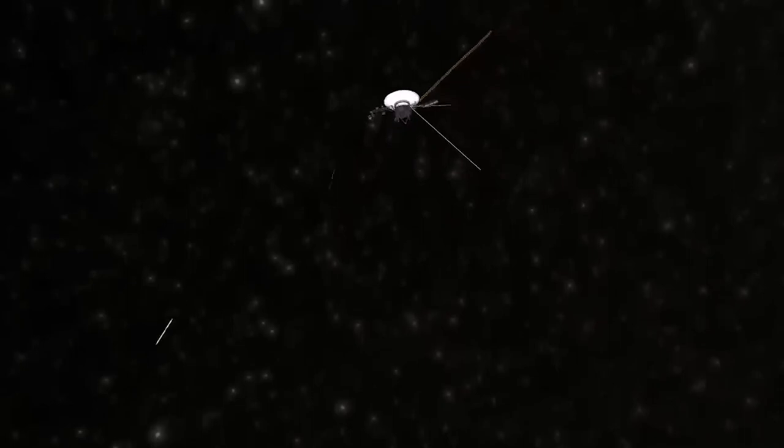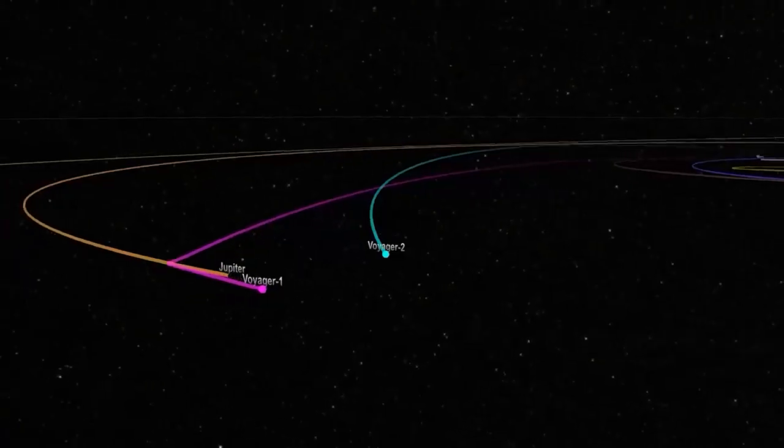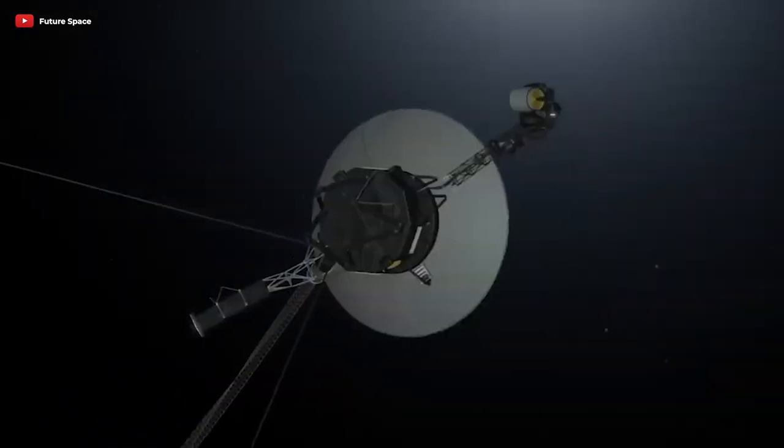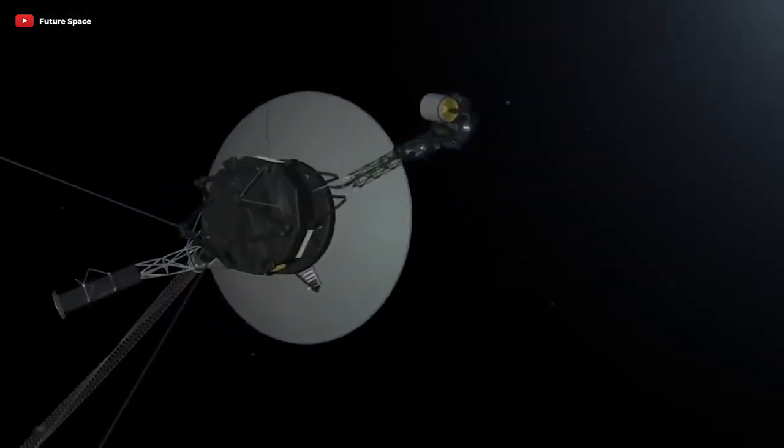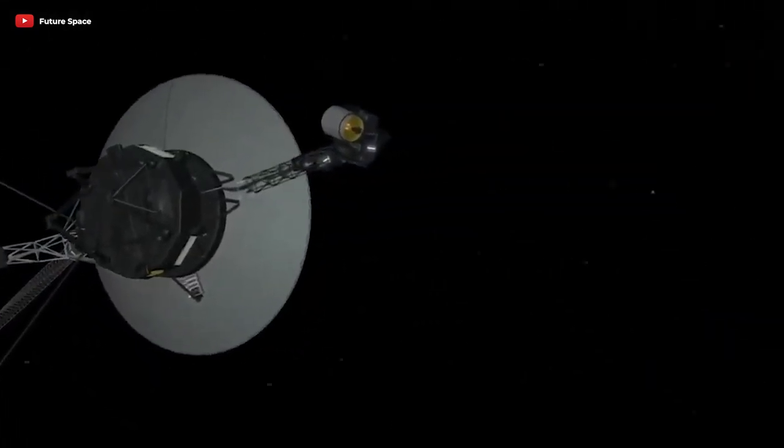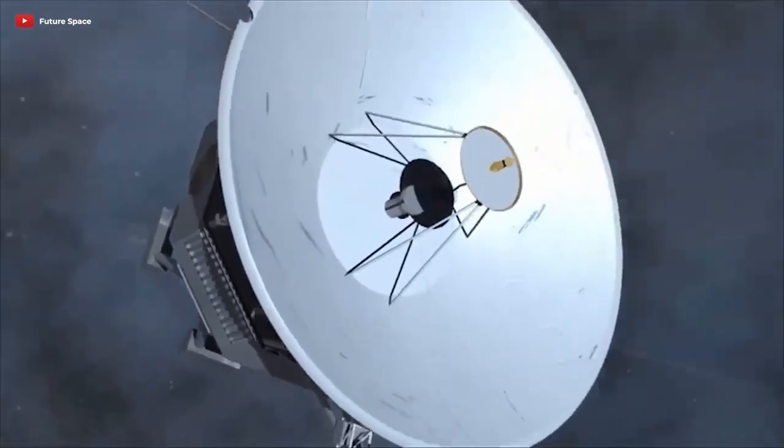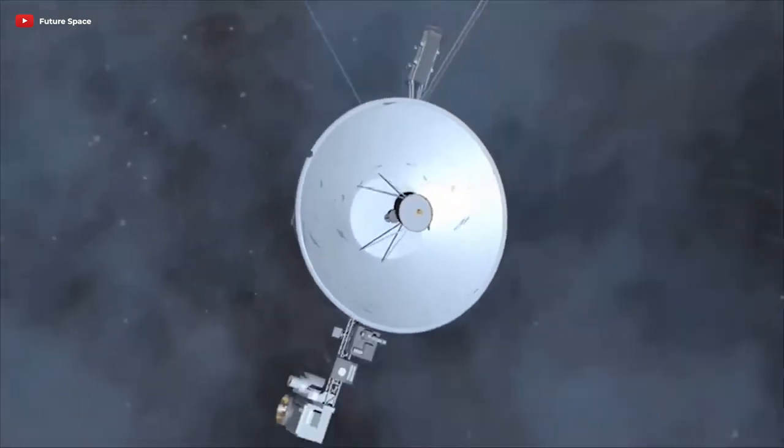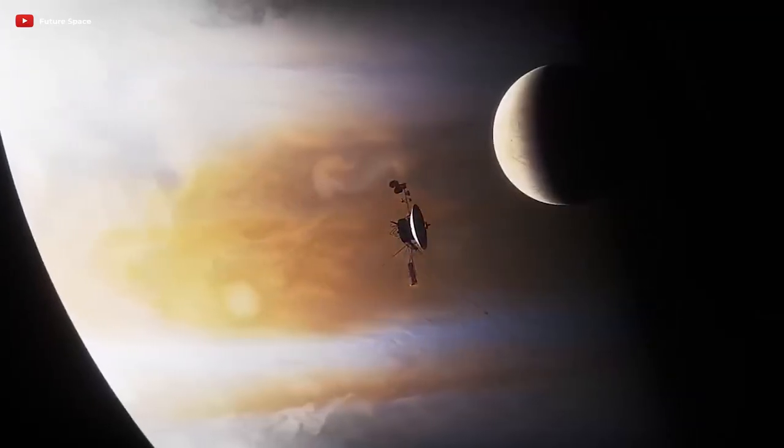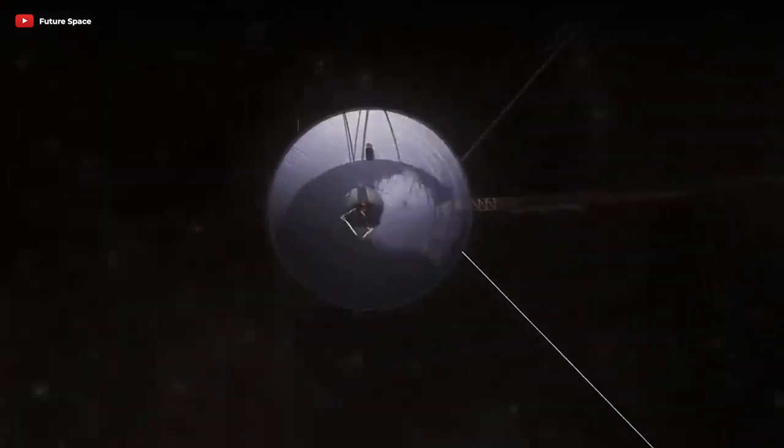Voyager 1 has performed exceptionally well, far exceeding the expectations of those who planned its mission. Its longevity is a testament to the advanced technology and engineering that went into its design and construction, as well as the dedication and hard work of the team at NASA's Jet Propulsion Laboratory. Despite the recent odd occurrence, Voyager 1's antenna remains correctly aligned, and the spacecraft continues to receive and carry out commands from NASA and transmit data back to Earth.